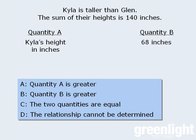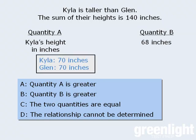So here we're comparing Kyla's height with 68 inches. To solve this question, we should first recognize that if Kyla were 70 inches tall, then Glenn would also be 70 inches tall, since their heights must add to 140 inches.